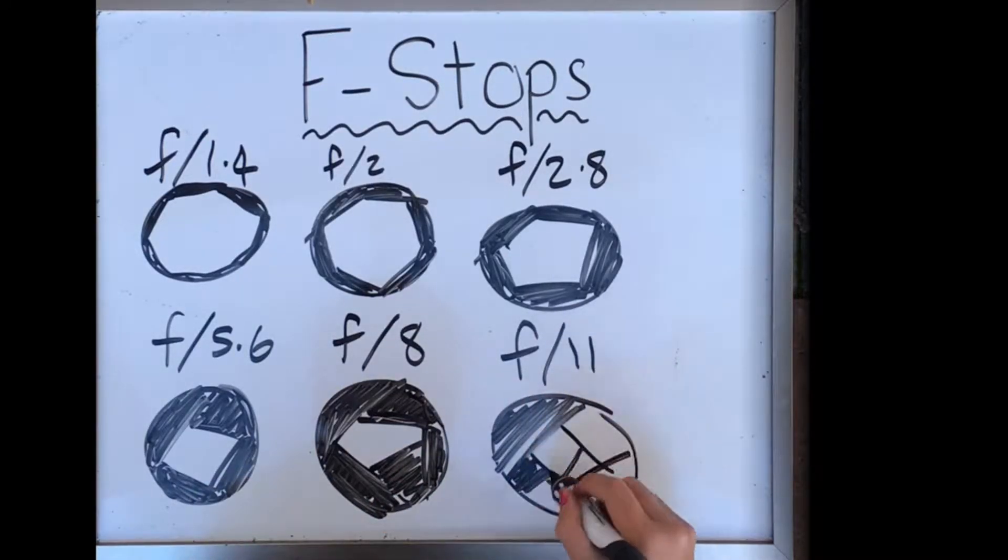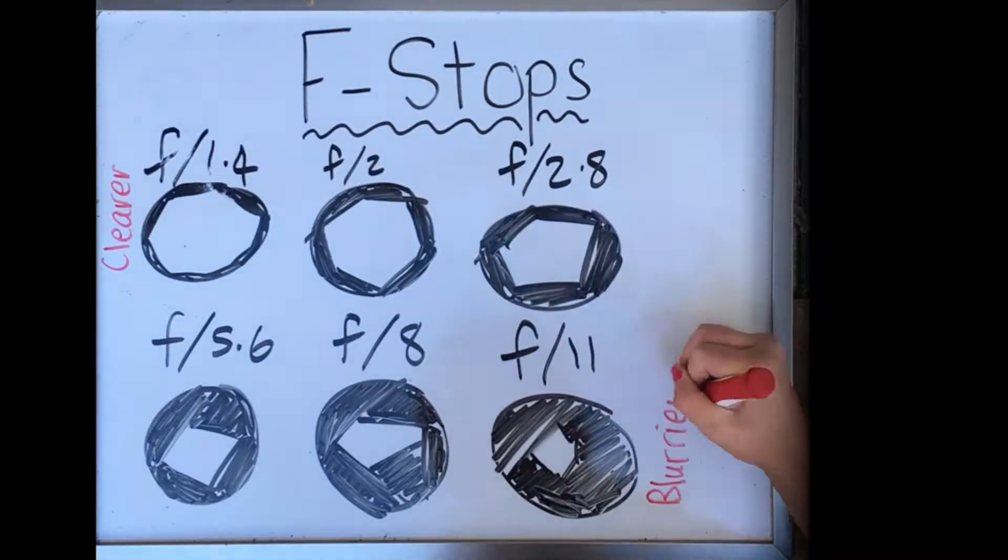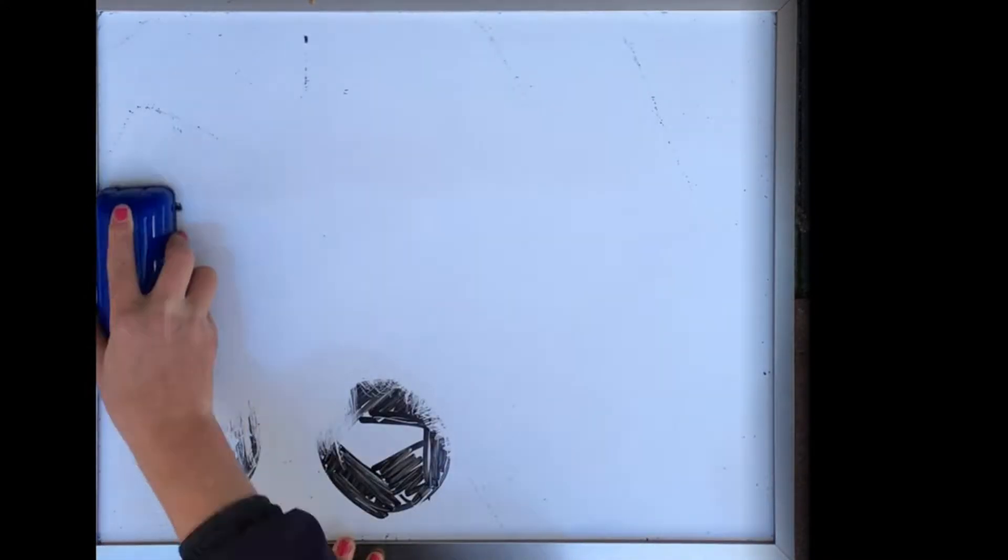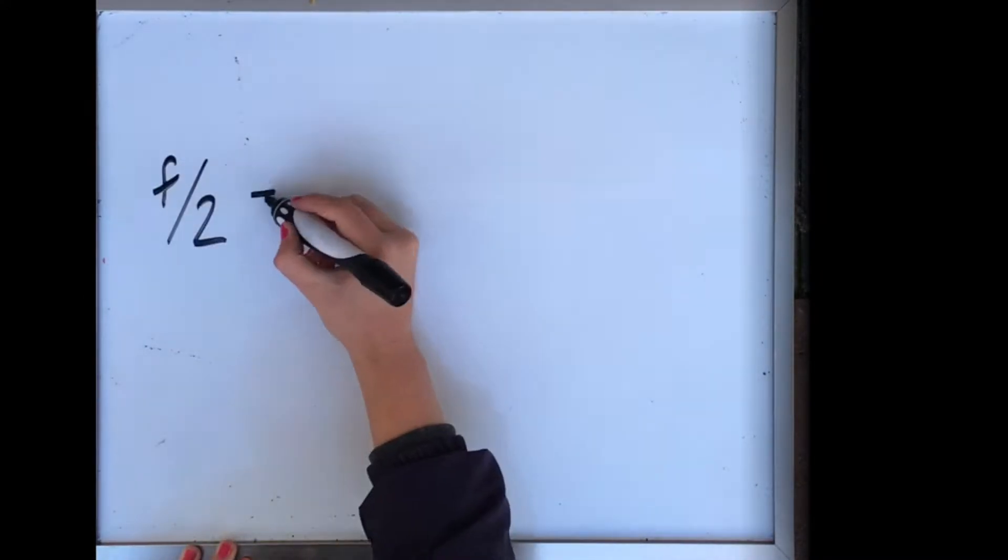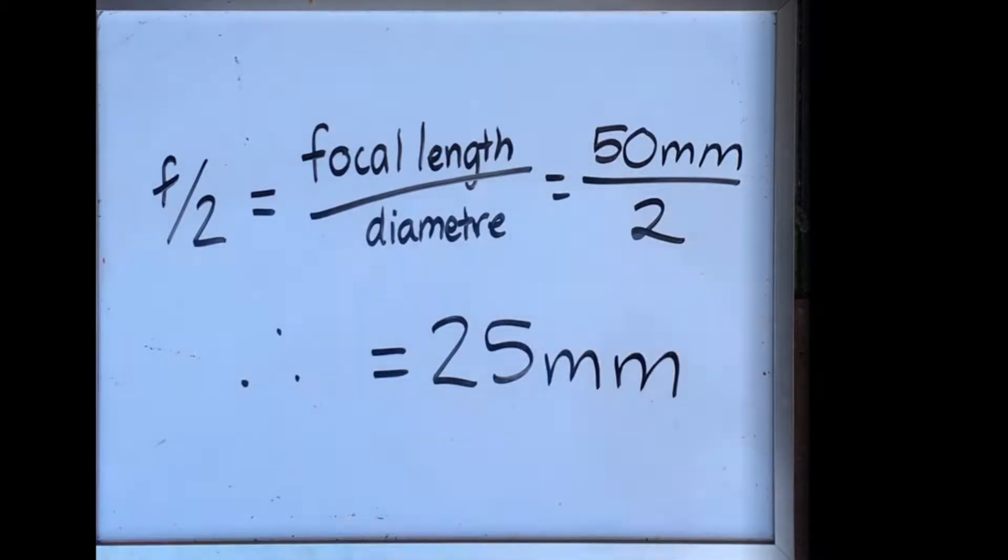The aperture, also known as the iris, is basically a circular shield with a hole in the centre that can open or close to adjust how much light is let in. The focal length is generally measured in millimetres, so let's say the focal length is 50 millimetres and the f-stop is f2, which means the diameter of the aperture is 25 millimetres, as it is the focal length divided by the f-stop.